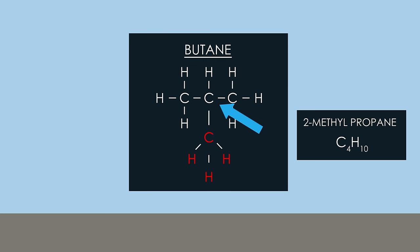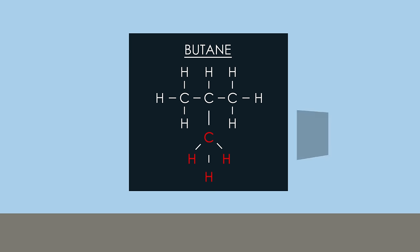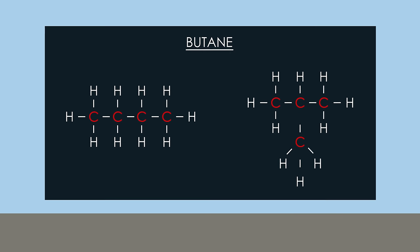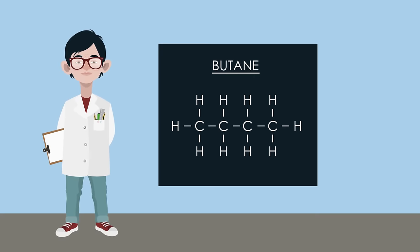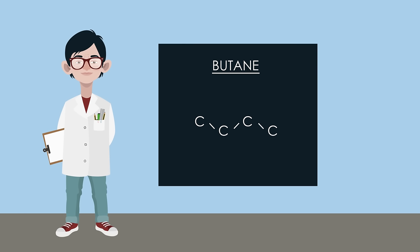Do not be confused — it is still an isomer of butane because of the four carbon atoms. To make it easier to draw the structural formula, we often omit hydrogen atoms and just show the bonds connecting the carbon atoms, bending the chain so you can see where the carbon atoms are.